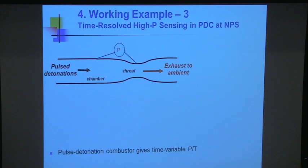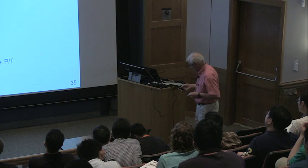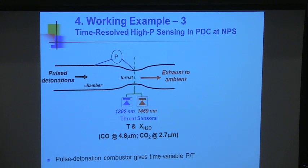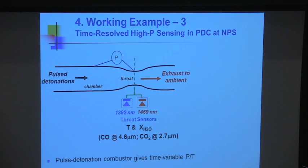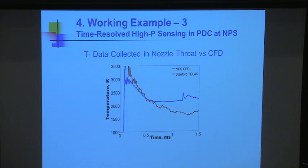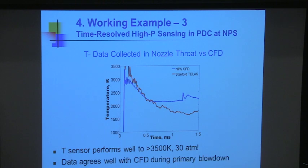The idea is to see that it's a pretty dynamic transient environment in which we're trying to make measurements. We analyze the data using near-infrared at 1.4 microns to measure temperature and water, and CO at 4.6 microns. We know where to make these measurements by virtue of the spectroscopy we've learned. Assuming choked flow, we convert this into the flux of enthalpy. Here's a plot of temperature versus time: the Stanford TDL tunable diode laser absorption spectroscopy is the red curve, the blue is some sort of model. Temperatures are up to like 3,000 degrees Kelvin, at 30 atmospheres — a pretty hostile environment. There's reasonably good agreement during the first part of this blowdown.